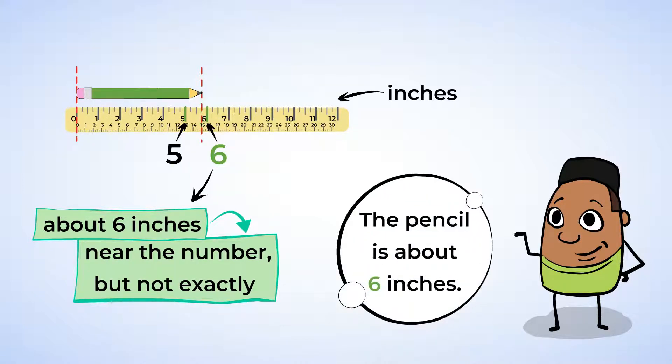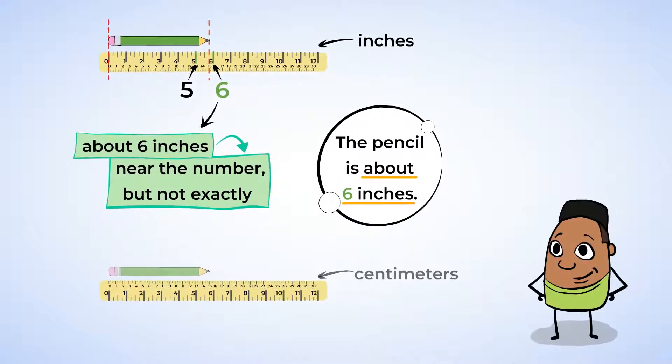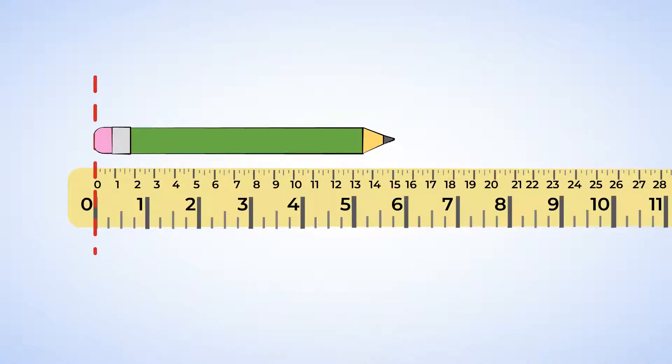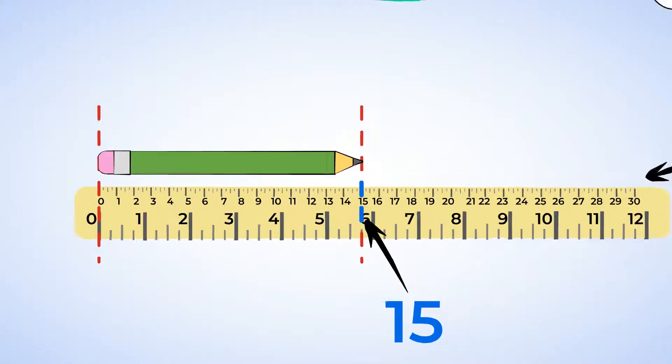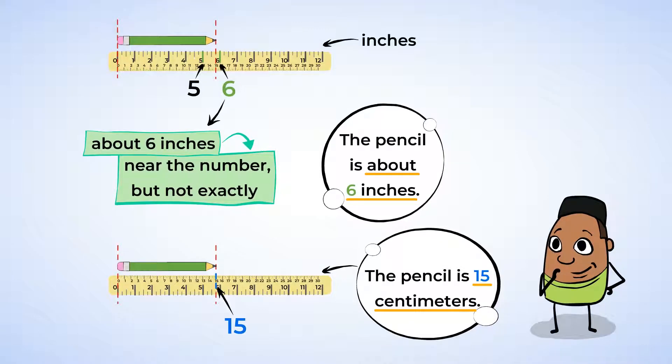So, now we know that the pencil is about 6 inches, but let's see how many centimeters it is. Okay, the pencil and ruler, again, are aligned on the left. That's good. And if we look on the other side, we can see that the pencil is 15 centimeters long. Well, that's interesting. When we measure the pencil in centimeters, it's a bigger number than in inches. I wonder if that's always true.